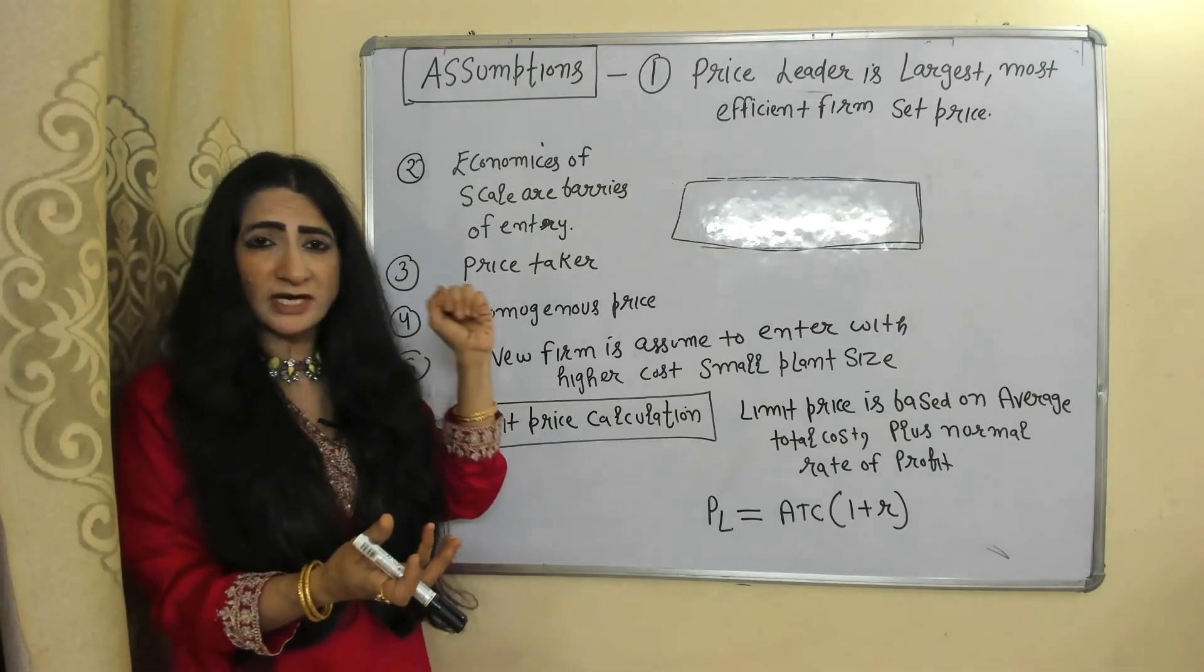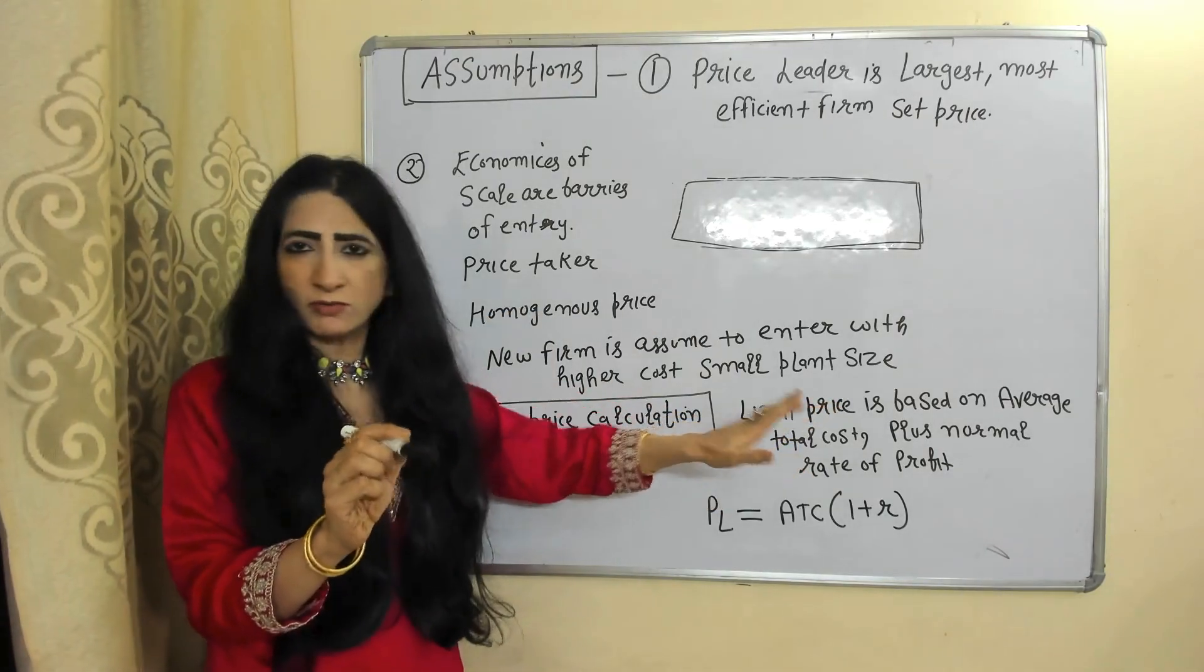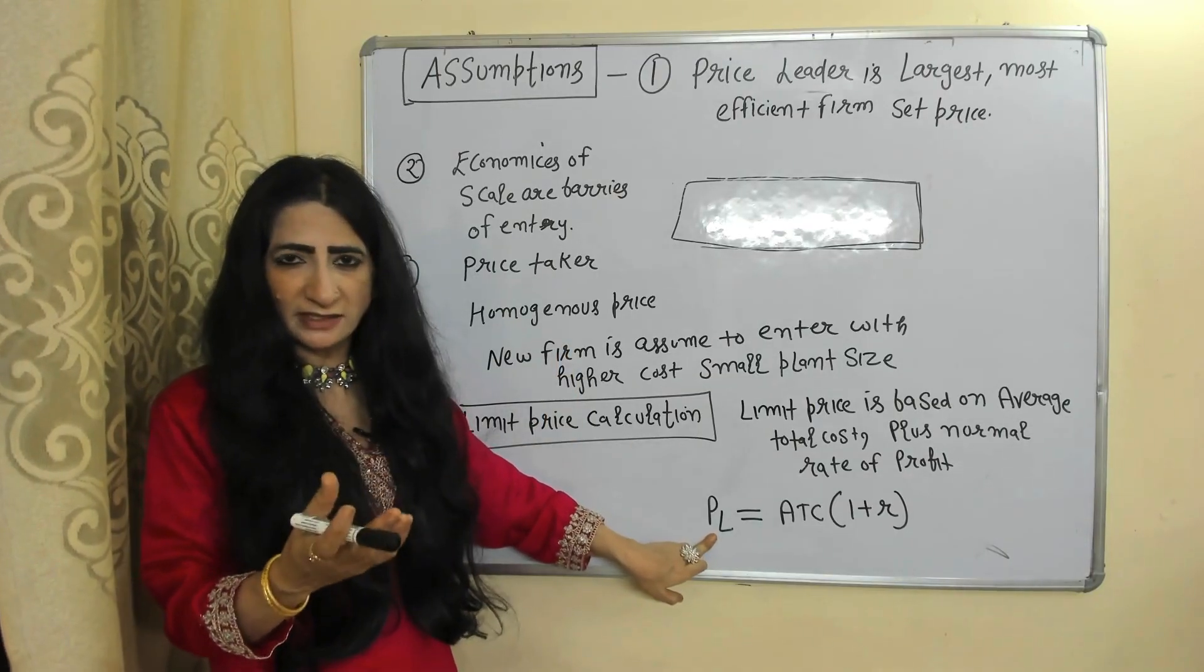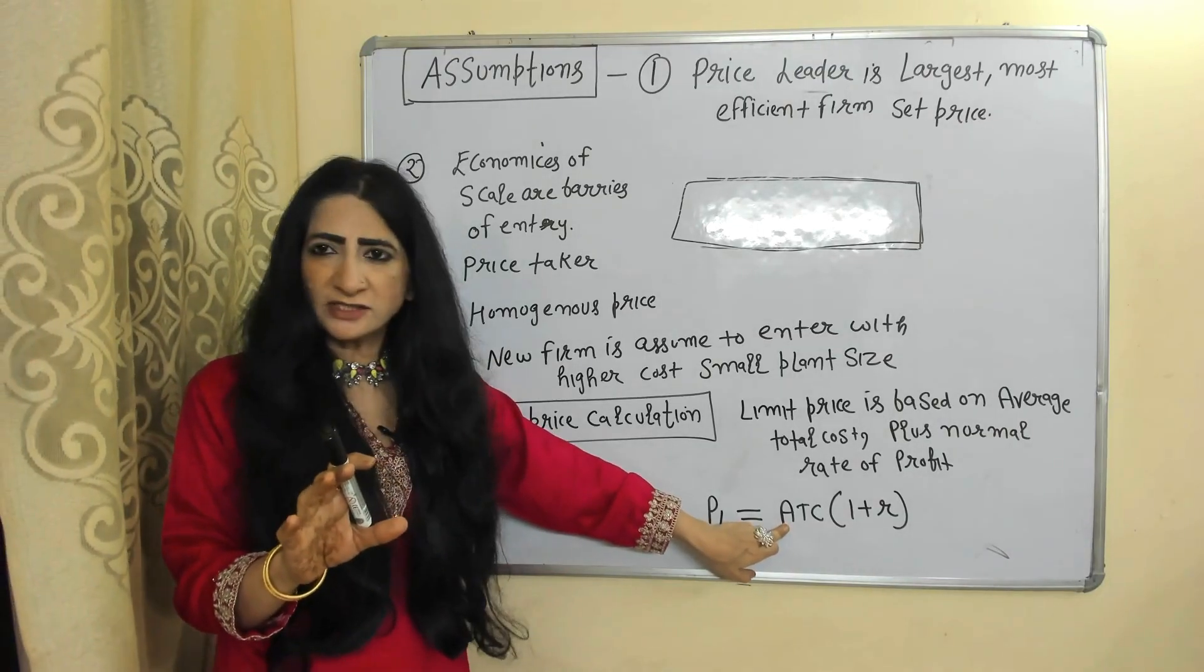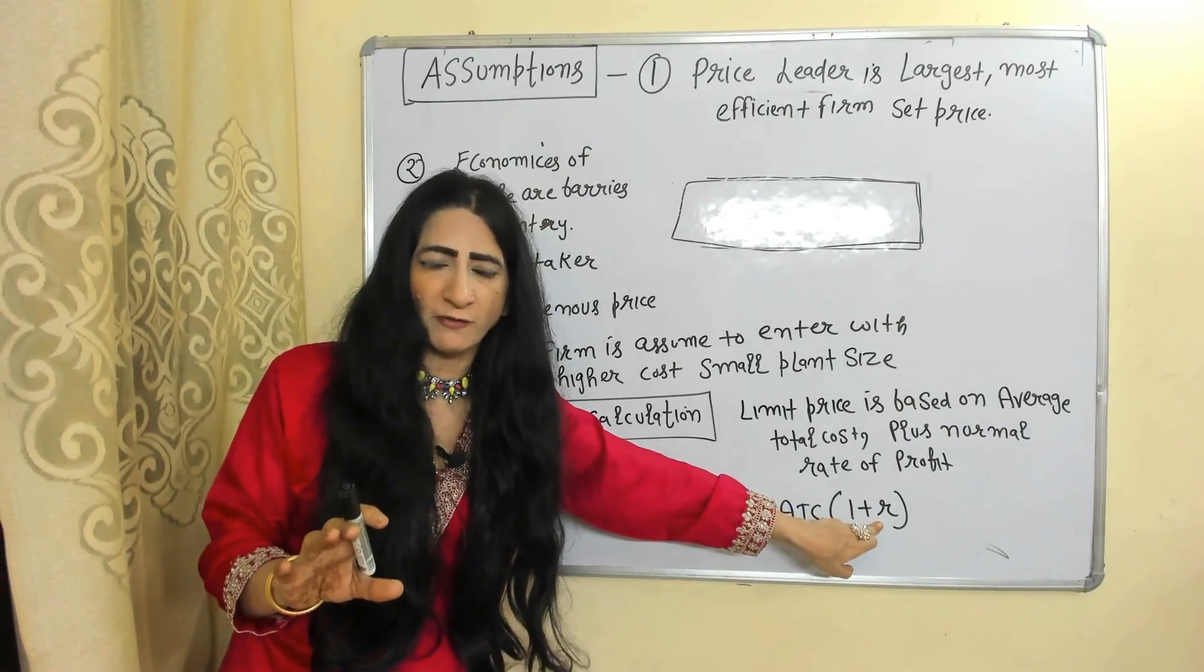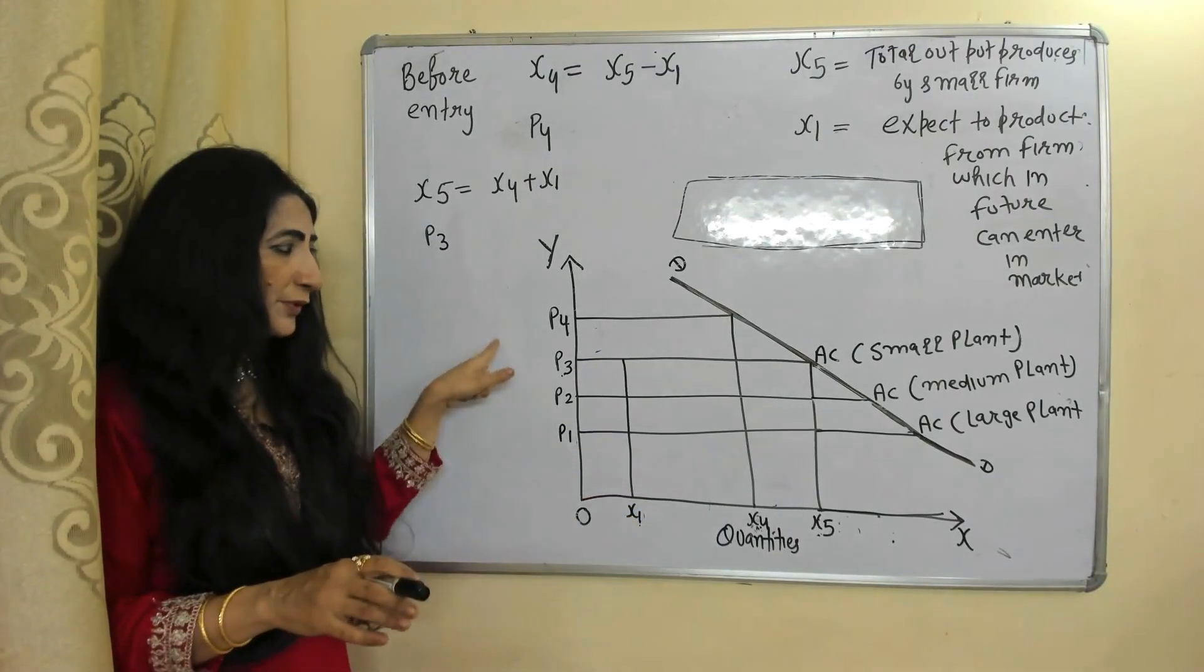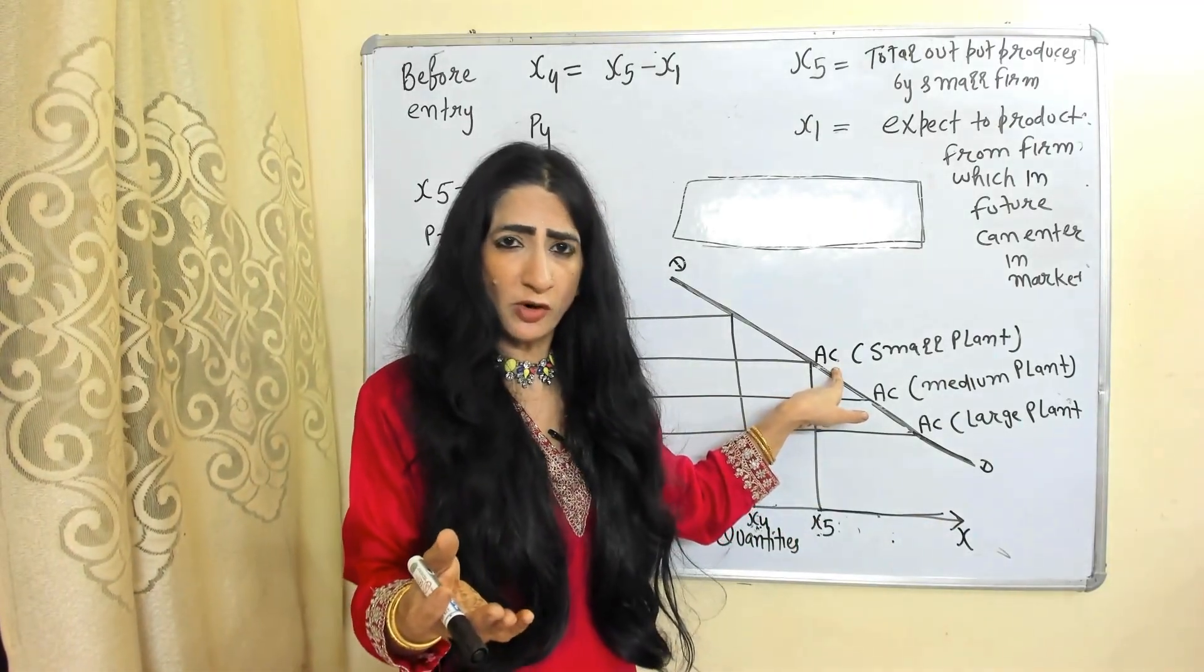How to calculate limit price? Leader firm calculates limit price based on average total cost plus normal rate of profit. In this equation, PL represents limit price which is set by leader firm. PL = ATC(1+R), where ATC is average total cost and R is the rate of profit.